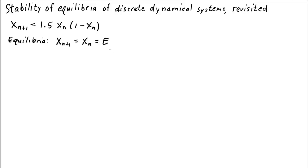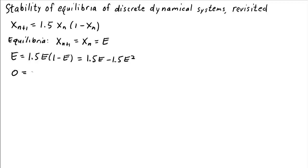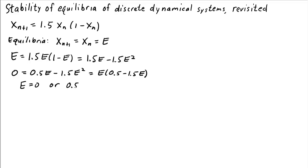We're looking for a value of the state variable which stays the same under the dynamical system. When we do that, we get e equals 1.5e times (1 minus e), which expands to 1.5e minus 1.5e squared. Subtracting e from both sides, we get 0.5e minus 1.5e squared equals 0. We can factor out e to find equilibria: e equals 0, or 0.5 minus 1.5e equals 0, giving e equals 0.5/1.5, which is 1/3.